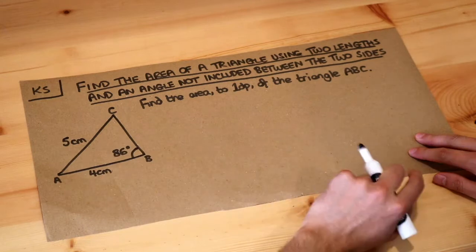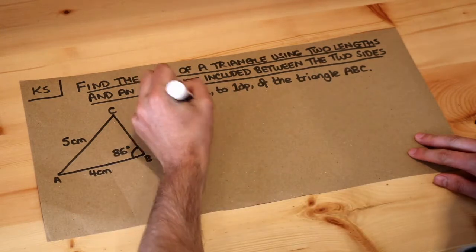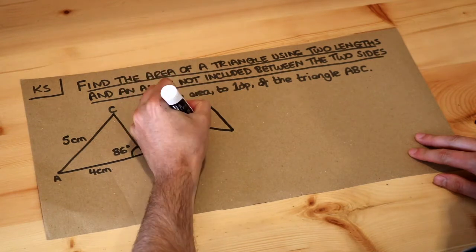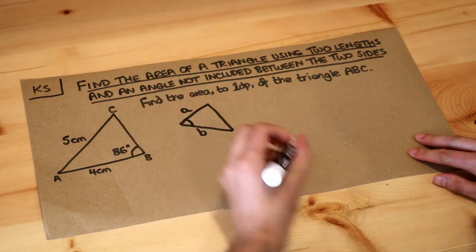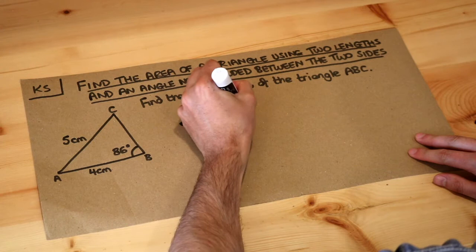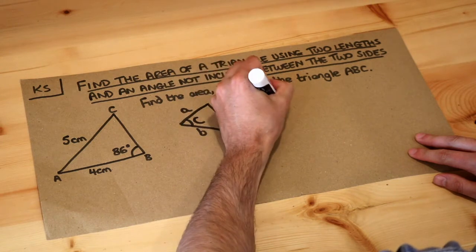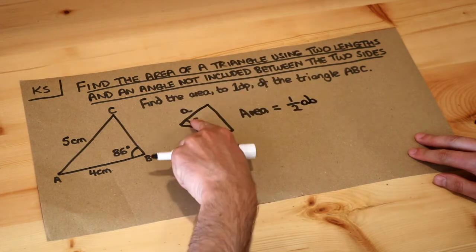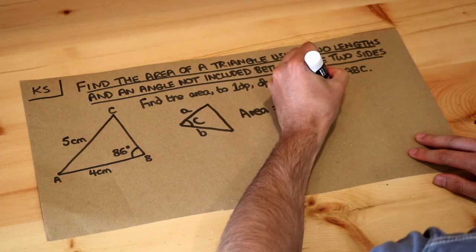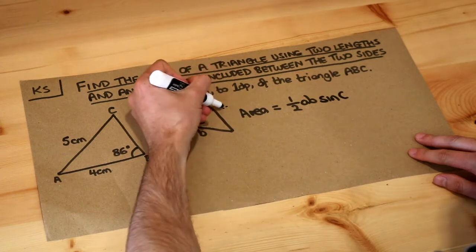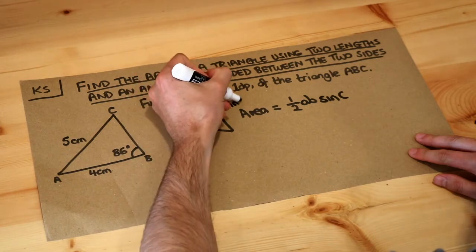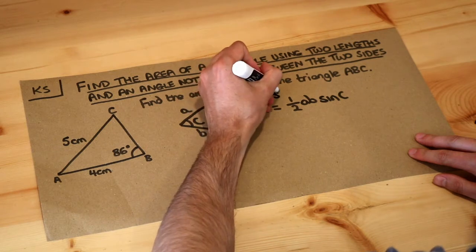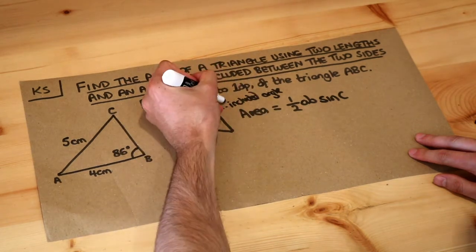We want to find the area of this triangle here. In the previous video we saw how we could find the area of a triangle if we had two sides, let's call them A and B, and the angle between them, let's call it capital C. The area of that triangle was equal to half times the product of the two sides, so AB, times the sine of the angle between them. Remember this angle is called the included angle because it's the angle between the two sides of interest.